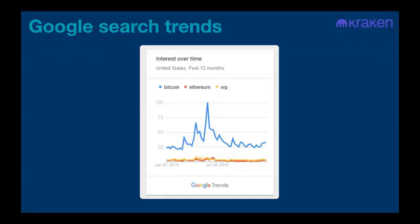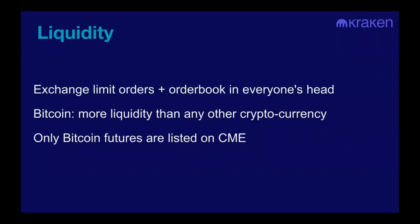Liquidity is the only utility of money — the ability to convert it into another asset with as little slippage as possible. Liquidity can be thought of as how many people are willing to buy or sell and how much at what price, including all the limit orders at exchanges as well as the order books in each person's head. Bitcoin has more liquidity than any other cryptocurrency — more real volume and is listed on more exchanges than any other cryptocurrency.